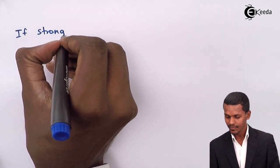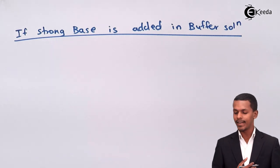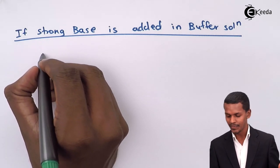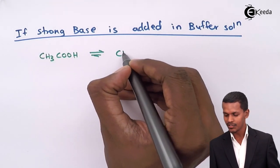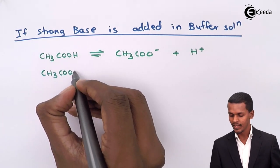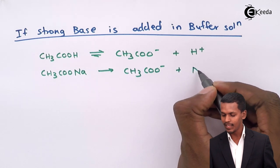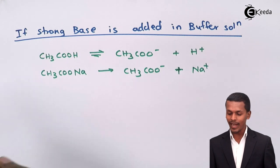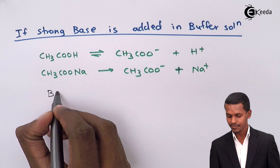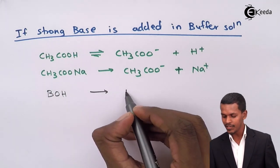If a strong base is added to the acidic buffer solution, recall that acetic acid dissociates into CH3COO⁻ and H⁺, while sodium acetate dissociates completely into CH3COO⁻ and Na⁺. Suppose we add a strong base like BOH; it will dissociate completely to form B⁺ along with OH⁻.